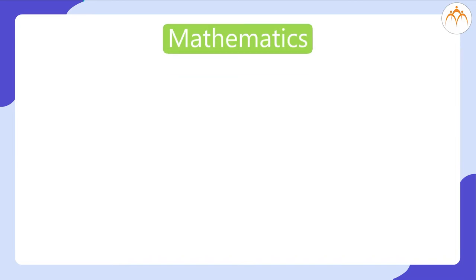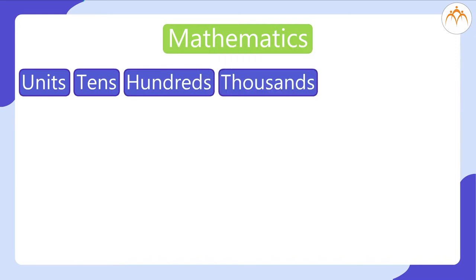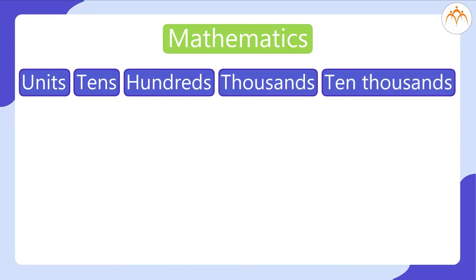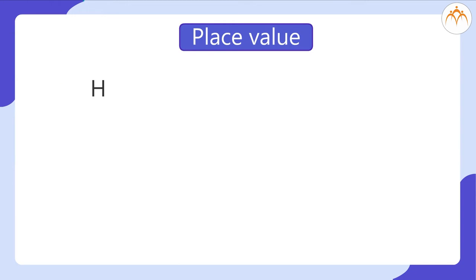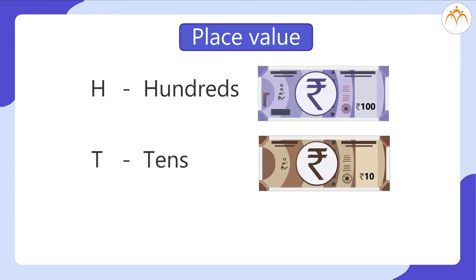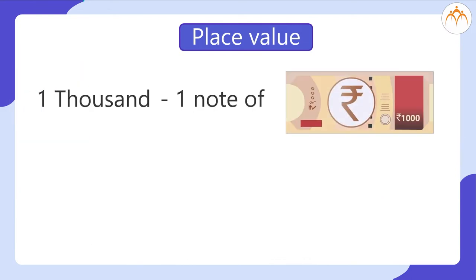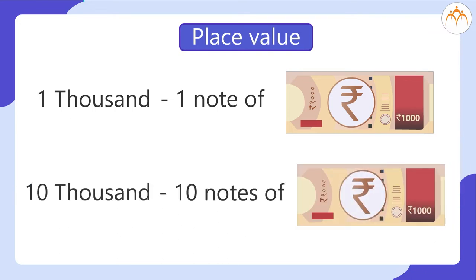And in mathematics, as you know, we indicate units, tens, hundreds, thousands, and 10,000 in the form of place value. Let's indicate these place values differently: H for hundreds, T for tens, and units. Similarly, we can indicate the 1,000th place with 1 note of 1,000 rupees and the 10,000th place by using 10 notes of 1,000 rupees each.